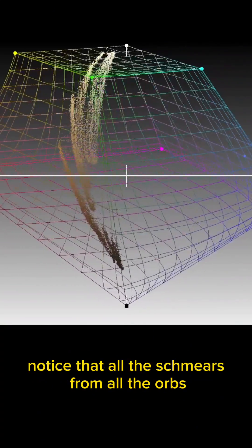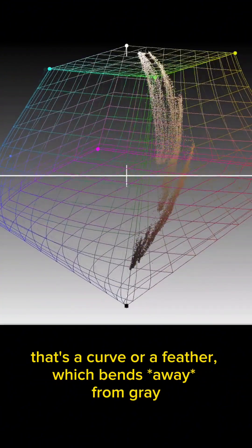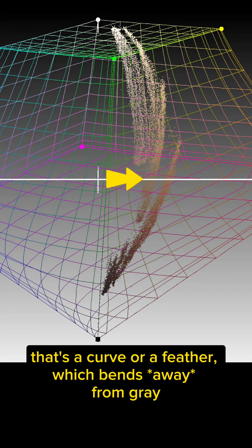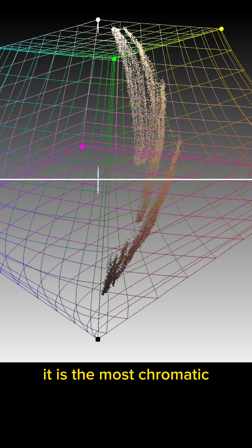Notice that all the smears from all the orbs follow this pattern that's a curve or a feather, which bends away from gray. In other words, as you reach that mid-tone, it is the most chromatic.